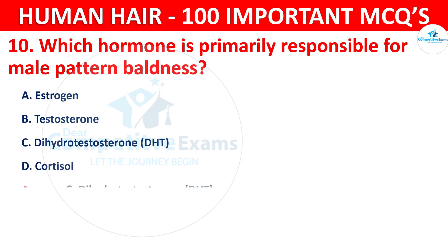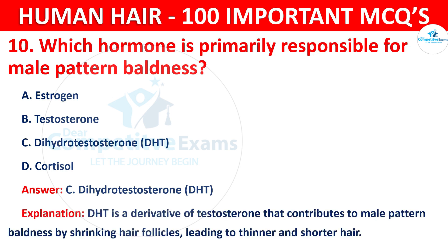The correct answer is C — dihydrotestosterone (DHT). DHT is a derivative of testosterone that contributes to male pattern baldness by shrinking hair follicles, leading to thinner and shorter hair.